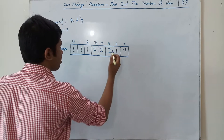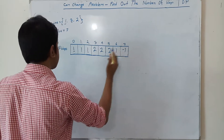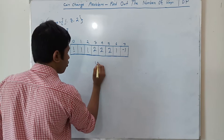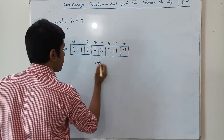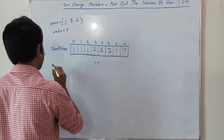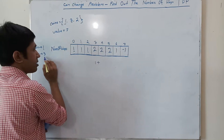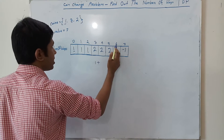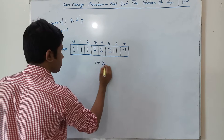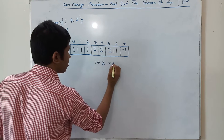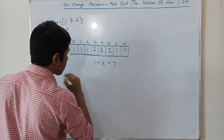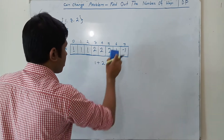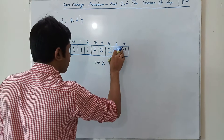When value is 6, the existing number of ways is 1, and the number of ways by using coin 3 is for 6 minus 3 equals 3, which is 2. So the total value here will be 3.